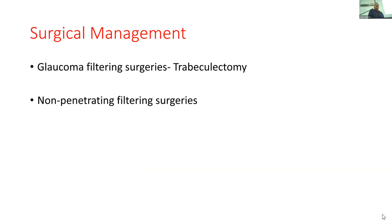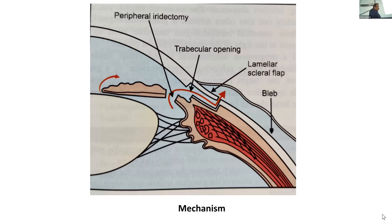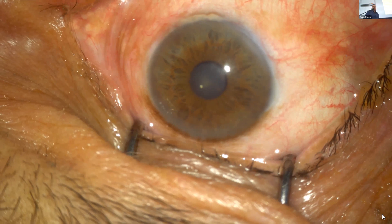Surgical management is glaucoma filtering surgery — trabeculectomy. Non-penetrating filtering surgeries are beyond the scope of this class. In trabeculectomy, there is creation of a lamellar scleral flap, then a subscleral sclerostomy inside Schlemm's canal along part of the sclera. A new drainage channel is created — drainage bypasses the trabecular meshwork, goes to the subconjunctival space and is absorbed, unlike the normal route through trabecular meshwork to episcleral veins. I will now show you recorded surgery.